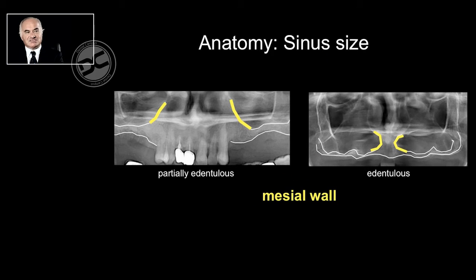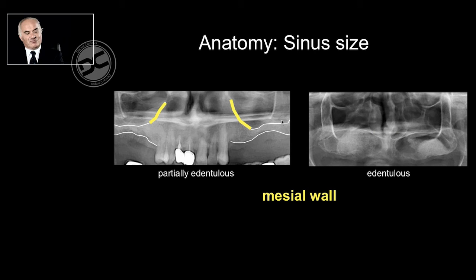This is very important when we are going to graft the sinus, because if we are not able to locate the medial wall properly, we will have a lack of bone in the anterior part of the sinus, and it will not be possible to place an implant.